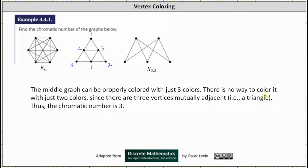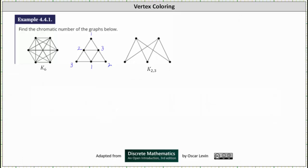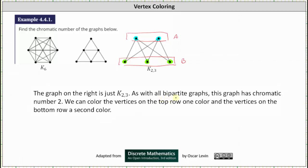There's no way to color it with two colors since there are three vertices mutually adjacent. The chromatic number is three. For the last graph, we have the complete bipartite graph K sub two comma three. The smallest number of colors needed to get a proper coloring for any bipartite graph is two. We can color all the vertices in one set one color and all the vertices in the second set a different color. This is a proper coloring because all adjacent vertices have different colors. In fact, for all bipartite graphs, the chromatic number is two.